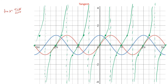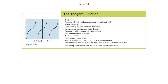Looking at the basic graph of tangent: the domain is all real numbers except for those asymptotes — the odd multiples of pi over 2. The range goes from negative infinity to infinity because of those vertical asymptotes. It's continuous on its domain, which is a bit misleading because there are asymptotes, but where it actually exists it's continuous. A piecewise function might have all real numbers as a domain but not be continuous — tangent is continuous everywhere except at those asymptotes.